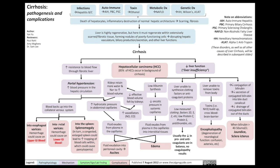Blood backing up into the rectal veins causes enlargement of these rectal veins, leading to rectal varices, and hemorrhage there could cause a lower GI bleed. Finally, blood backing up into the spleen can result in the spleen becoming congested and enlarged, leading to increased trapping of blood cells and other cells within the spleen, causing pancytopenia — a reduction of white blood cells, red blood cells, and platelets in the body.